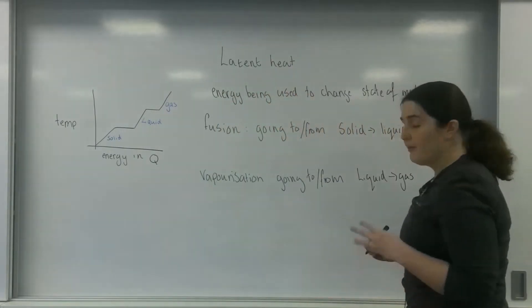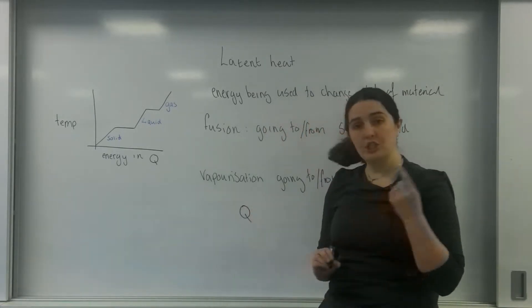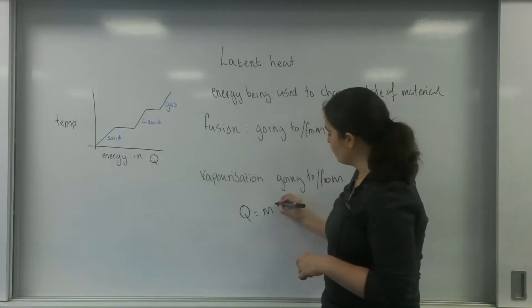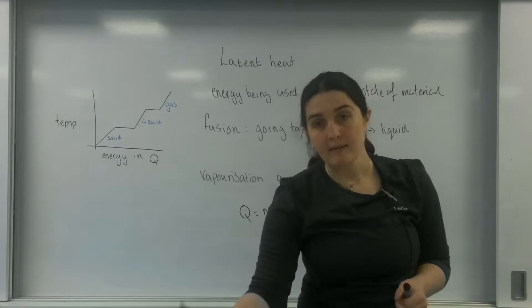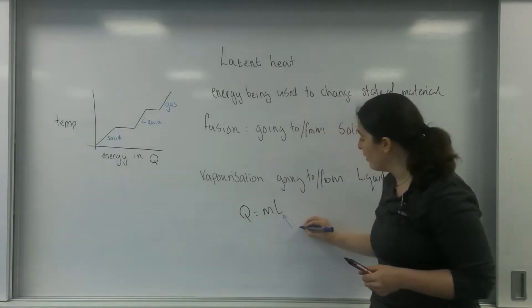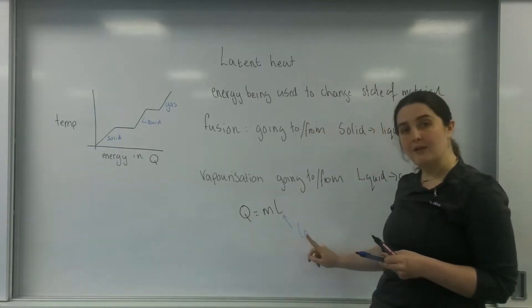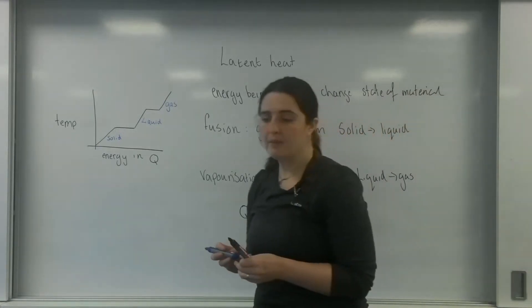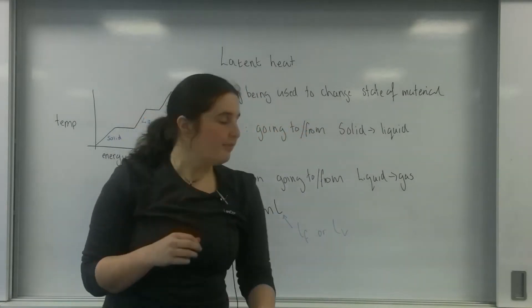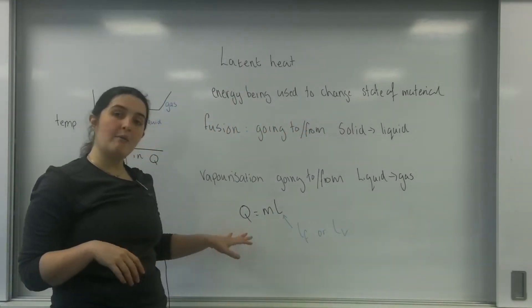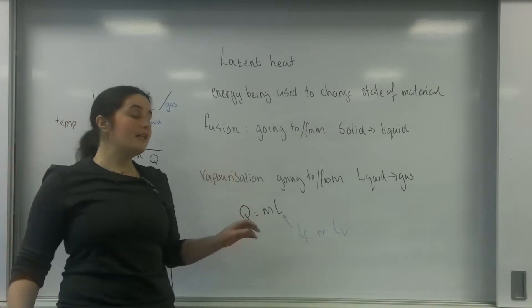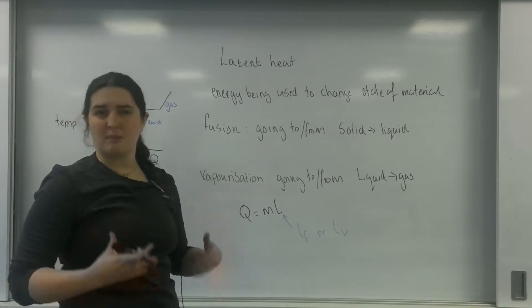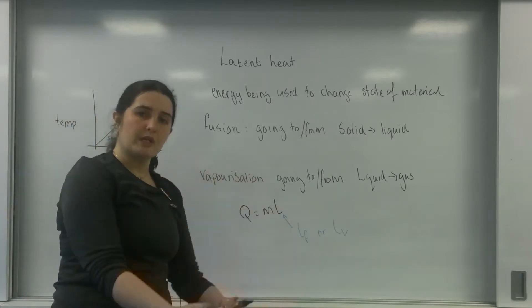So the formula for latent heat is that the energy required to change the state is the mass of the object times by the latent heat. Now this latent heat here, they may write it as LF for the latent heat of fusion or LV. So this is a way of calculating how much energy you would need to completely change the mass of an object from one state to another.